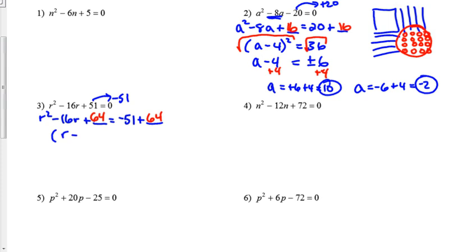So the left-hand side becomes R minus eight squared. Two numbers that multiply to be 64 and add to be negative 16. And then the right-hand side becomes 13. And the rest of the steps are all the same. We're going to square root both sides. This one doesn't turn out to be a perfect square. So that's positive and negative square root of 13.